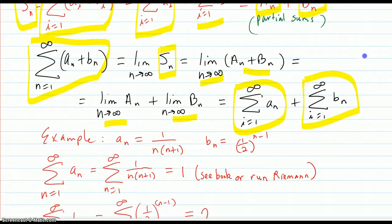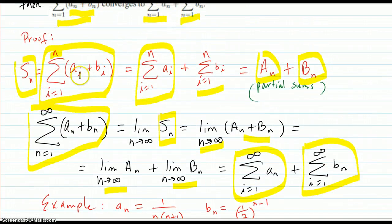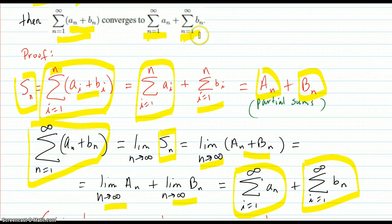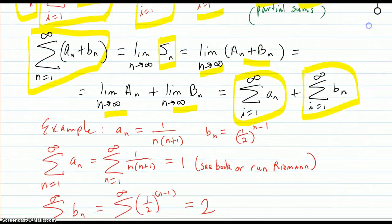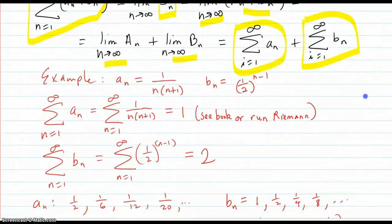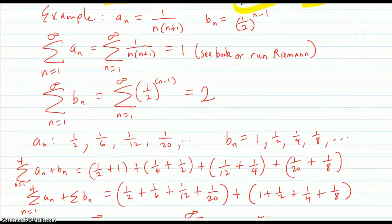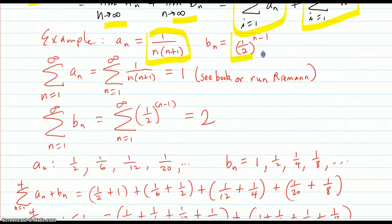In other words, you can break up sums inside these series and write it as two different series. Here's an example. Let's say you had this sequence an = 1/n(n+1) and this one bn = (1/2)^n.